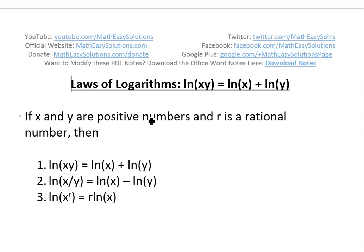So if x and y are positive numbers and r is a rational number, like you've seen in my earlier video, rational numbers basically means r equals a over b where these are both integers and b is not equal to 0.